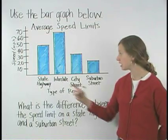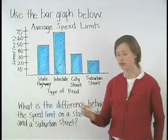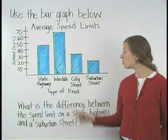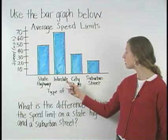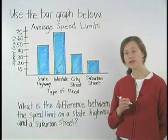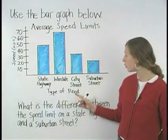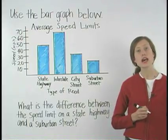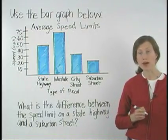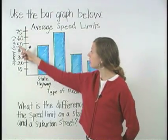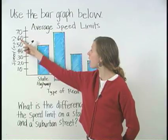By first finding — notice that the horizontal axis of our bar graph is labeled as type of road, and the vertical axis of our bar graph is labeled as speed in miles per hour.